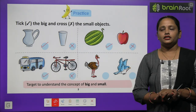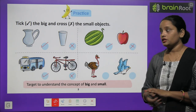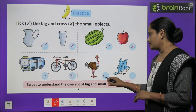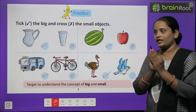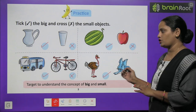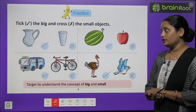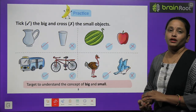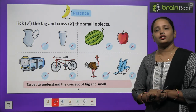Here you can see there is an ostrich and a bird. Ostrich aapne dekha hai, kitna bada hota hai? Bahut bada hota hai. So ostrich hai big. And yoh jo bird hai, chhoti si bird hamare ghar mein aati hai, pani pee ke jaati hai — yoh hai small. So we have learned the objects that are big and small. Big objects ko humne tick kiya hai aur small objects ko humne cross.